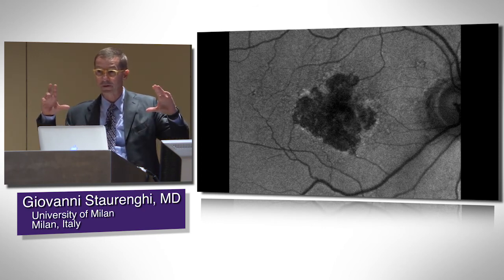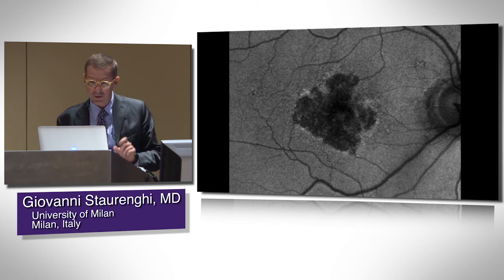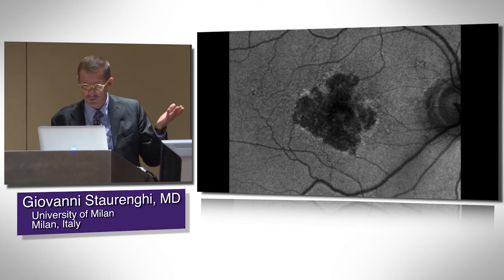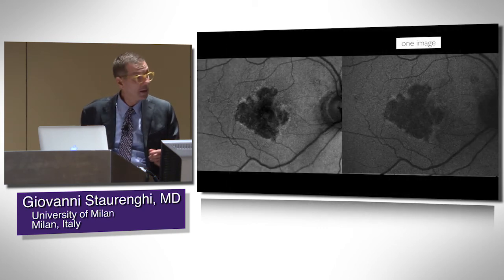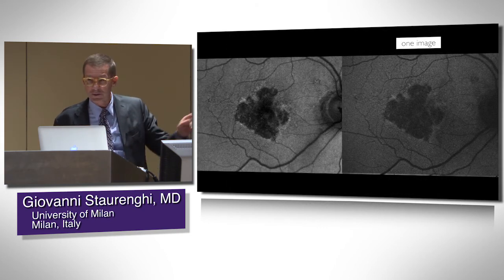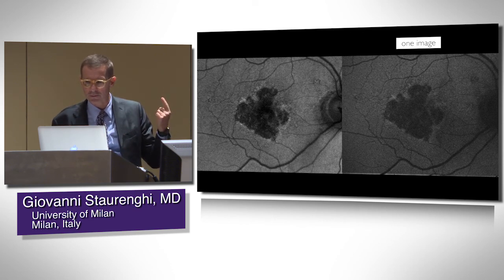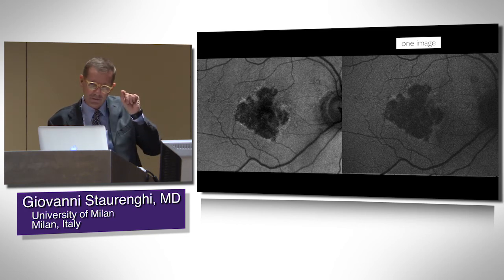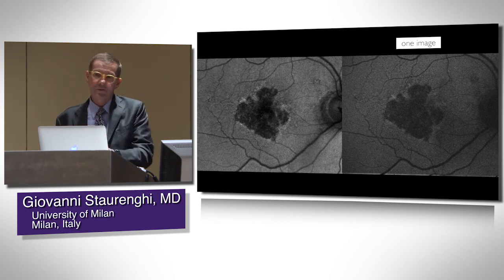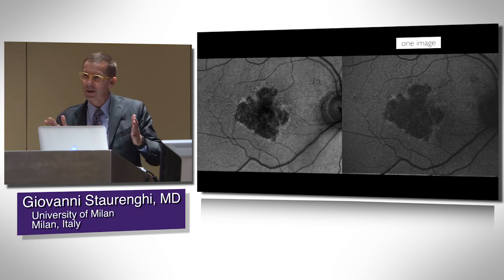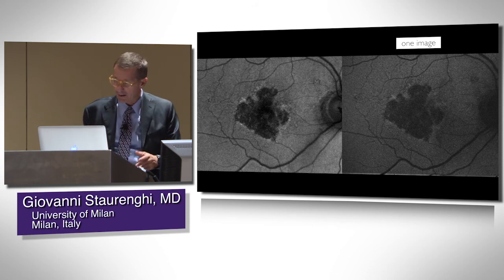This is the same patient taken with the Heidelberg — that image is a mean of multiple frames. Here is the same patient with the Adon. But what if we take a single image from the Heidelberg? You can see that because it's more confocal, you lose light. So you need to average a series of images to get a decent image quality.